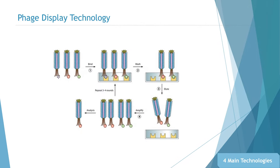Phage display technology is another powerful tool in the discovery of antivirus biomolecules that can be widely used to select or isolate proteins, scaffolds, peptides, or antibodies with high affinity and specificity for targets of interest. Initially, the phage display library is incubated with targets immobilized on solid scaffolds. Specific library phages bind to target molecules, while the unbound phages are washed away. Then specific phages are eluted and amplified by infecting E. coli cells. After several rounds of selection, amplified clones can be sequenced and analyzed to obtain diagnostic and therapeutic agents with desired properties.